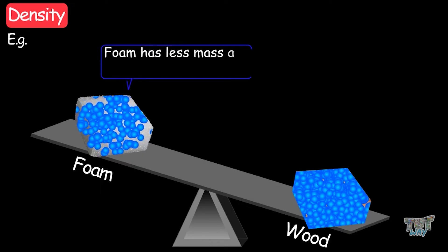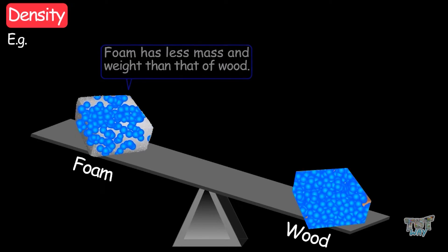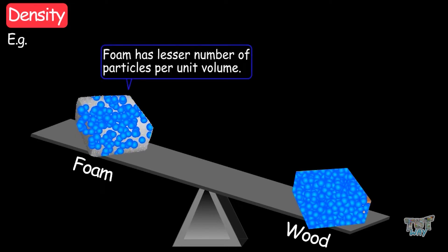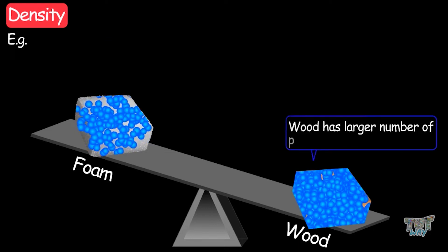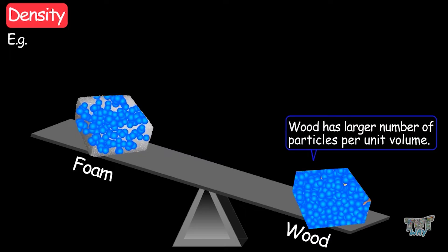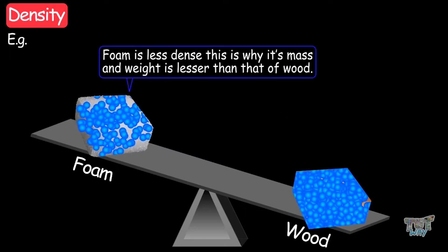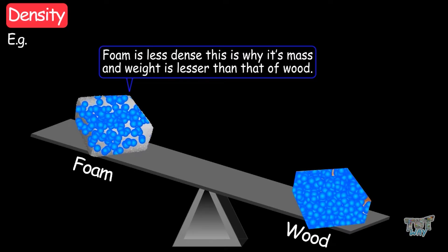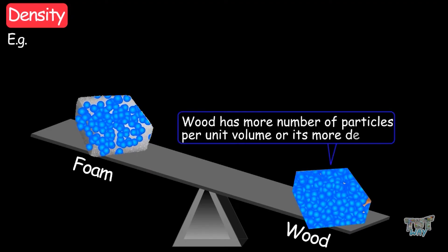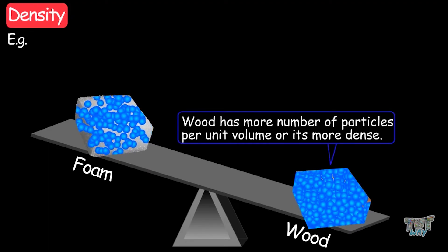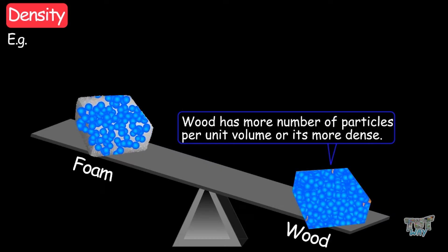Foam has less mass and weight than the wood. In other words, foam has a lower number of particles per unit volume, and wood has a larger number of particles compared to foam per unit volume. So foam is less dense, and this is why its mass and weight is lower than that of wood. Wood has a greater number of particles per unit volume, so it's more dense, and its weight and mass is more than a piece of foam of the same size.